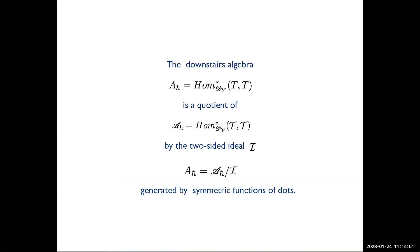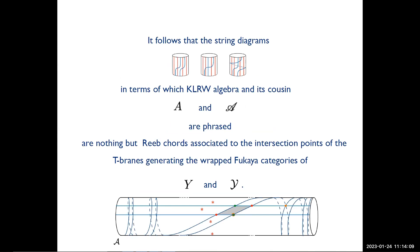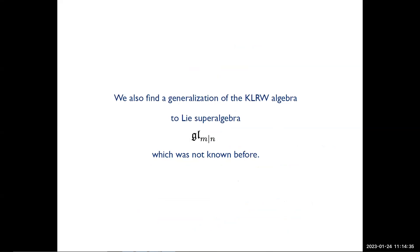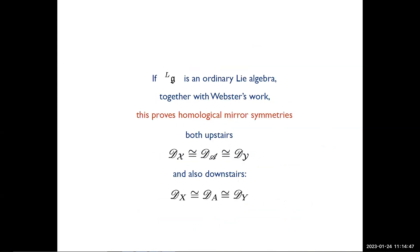Just like in the GL(1|1) case, the degrees of all intersection points are sums of the degrees of string bits, except now they're all in Maslov degree zero because the root is bosonic — every time the Lie algebra has only bosonic roots, the whole theory is in Maslov degree zero and you get an ordinary associative algebra. Filling the diagonal back in, the only relations that can deform are the D-type ones, and to understand this deformation you need to count only a single disc. Everything else is fixed on degree grounds and also by associativity. This is done in the joint paper with Zhou and others. The very same single disc count necessary for the SU(2) case suffices to compute the algebra for general G — associativity fixes everything. If G is an ordinary Lie algebra, the resulting upstairs algebra is a cylindrical KLRW algebra discovered by Khovanov, Lauda, Rouquier, and generalized by Webster to include red strands. The downstairs algebra is a quotient of it by the two-sided ideal generated by the symmetric functions of the dots. It follows that if you've heard about KLRW algebras — which were discovered around 2006 and were always phrased in terms of string diagrams — now we know where these string diagrams come from: they're nothing but Reeb chords associated to intersection points of T-branes. We also find the generalization of the KLRW algebra to the superalgebra GL(M|N) that was not known before. Together with Webster's work, this is a proof of homological mirror symmetry both upstairs and downstairs.